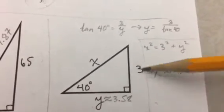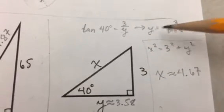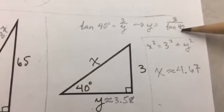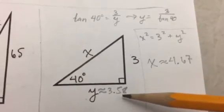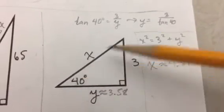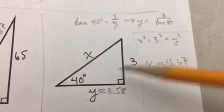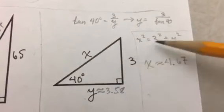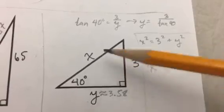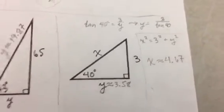The next problem is similar to that. We're looking for this side here, so the tangent of 40 is 3 over y. Again, I'm going to switch places: y is equal to 3 over the tangent of 40, and that gives me about 3.58. Now this side here, we're not using trigonometry to find that. Now we've got two sides of a right triangle and we can use the Pythagorean theorem to find the third side. So it's about 4.67.